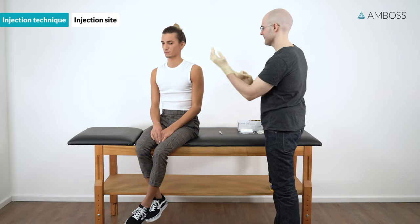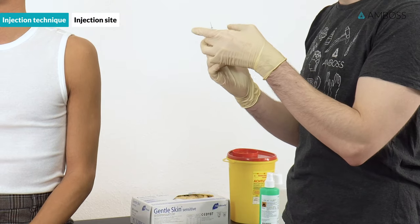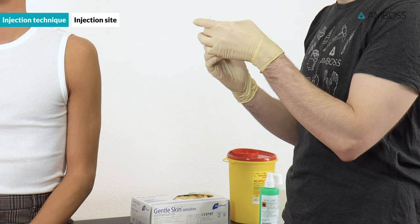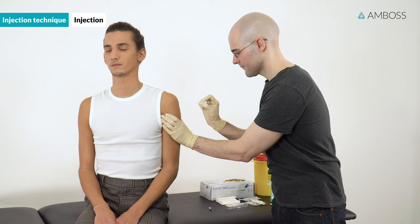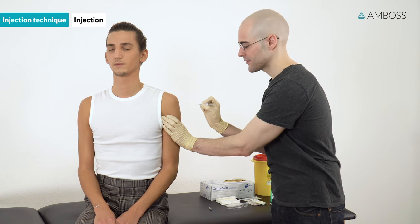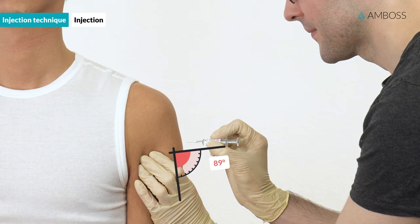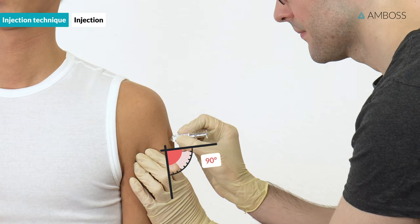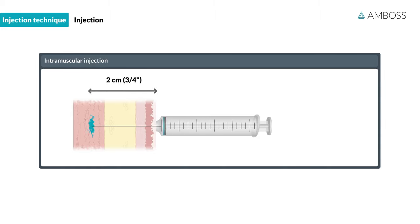Put on gloves while waiting for the site to dry. Remove the cap and expel larger air bubbles from the syringe; small amounts of residual air do not pose a risk to the patient. Hold the deltoid muscle with your non-dominant hand without lifting the subcutaneous tissue. Hold the syringe between thumb and forefinger, roughly like a dart. Encourage the patient to distract themselves from the pain by coughing or holding their breath. Quickly pierce the skin perpendicular to the surface; the standard puncture depth is about 2 cm (3/4 of an inch), but this should be adapted to the thickness of adipose tissue.